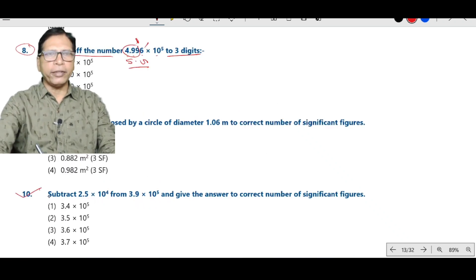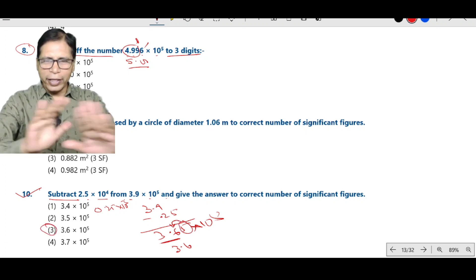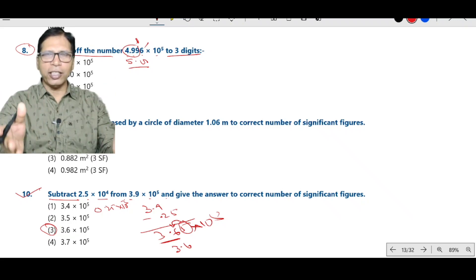Now question number 10, subtract 5.4 into 10 to the power 4 from 3.9 into 10 to the power 5. This can be written as 0.54 into 10 to the power 5. So 3.9 minus 0.54. This becomes 3.36 into 10 to the power 5. So this becomes 3.6 into 10 to the power 5. Because before 5, there is even number, so no addition takes place. The result is 3.6 into 10 to the power 5.